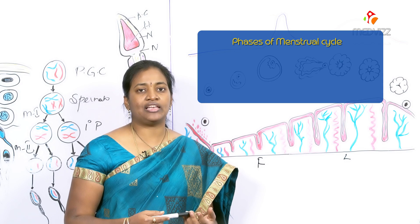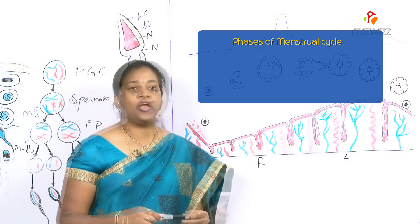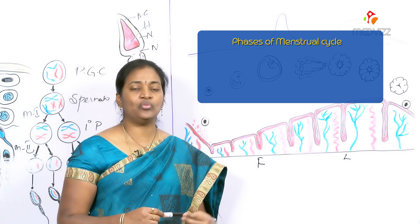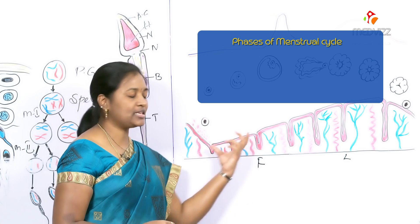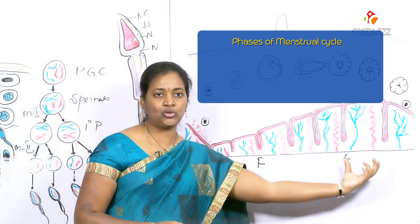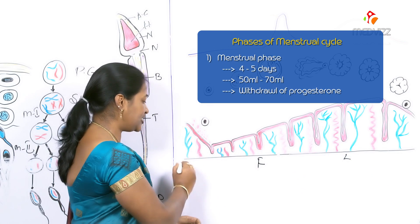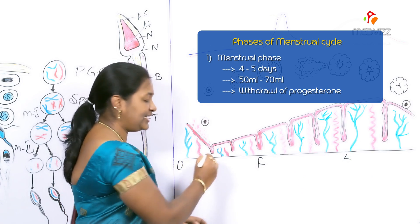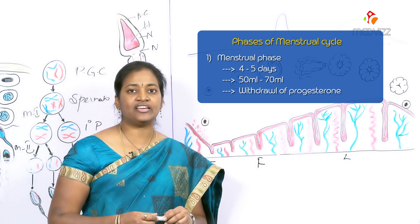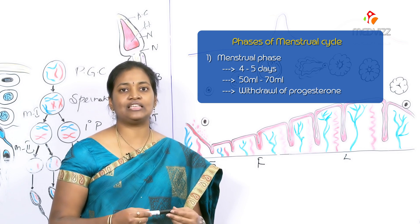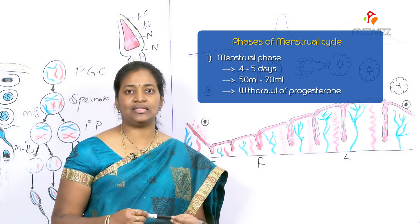The changes in estrogen and progesterone levels cause cyclical changes in the female reproductive tract. For convenience, the whole menstrual cycle is divided into three phases: the menstrual phase, the proliferative phase, and the luteal or secretory phase. The menstrual phase is normally 0 to 5 days, during which the functional layer of the uterine wall is shed and discarded with the menstrual flow.